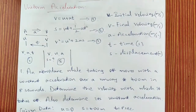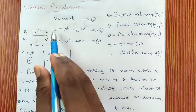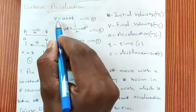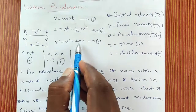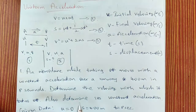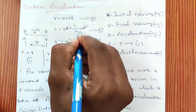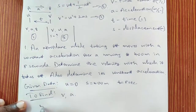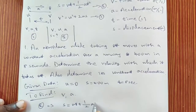We have the values of u, s and t, and we need to calculate v and a. Using equation 2 — s = ut + ½at² — we know s, u and t, so a is the only unknown. Substituting: 400 = 0 + ½ × a × 8². Solving this equation gives a = 12.5 m/s².